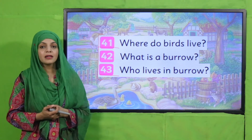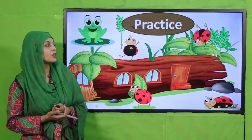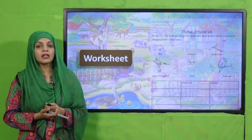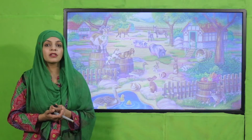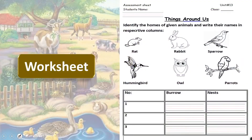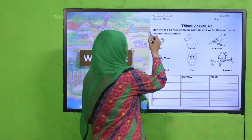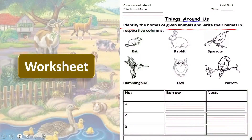Now is the time for practice. You can download this worksheet from the description box below or get it in print form from your teacher. Write down your name and class, then identify the homes of the given animals and write their names in the respective columns.